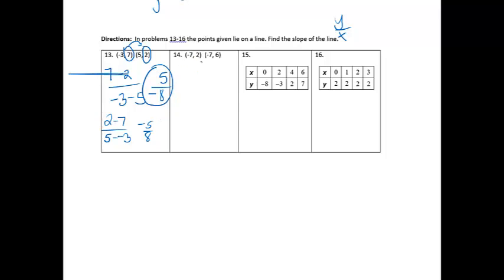Alright, number 14, same thing. I'm going to circle my y's. This time I'm going to go right minus left, even though it doesn't really matter. The y's subtracting would be 6 minus 2, and then my x's would be negative 7 minus negative 7. Alright, 6 minus 2 is 4. Negative 7 minus negative 7 would be 0.